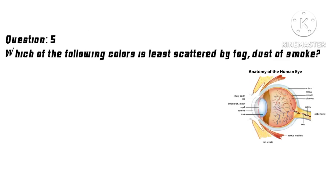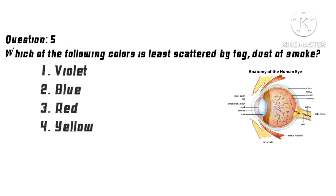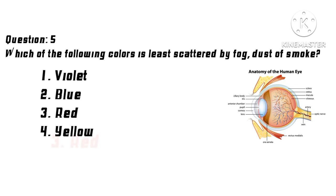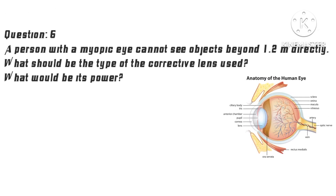Question 5: Which of the following colors is least scattered by fog, dust, or smoke? Options: 1. Violet, 2. Blue, 3. Red, 4. Yellow. Correct answer: 3. Red.